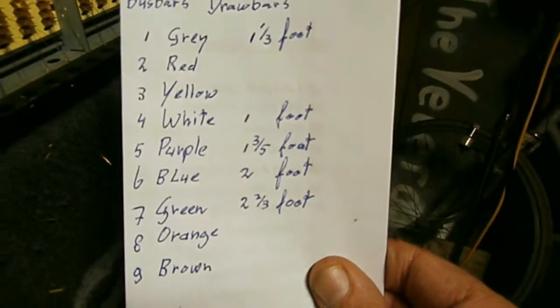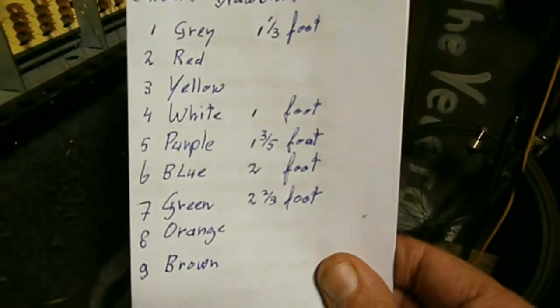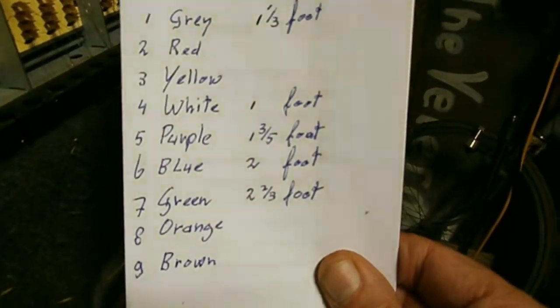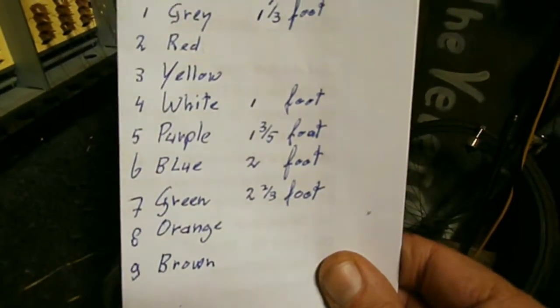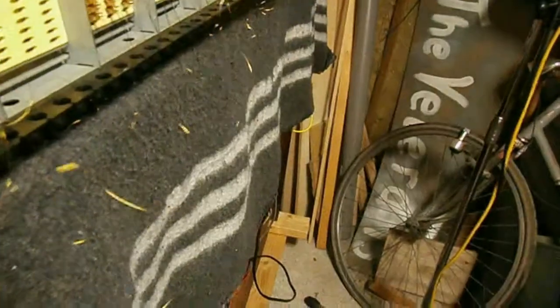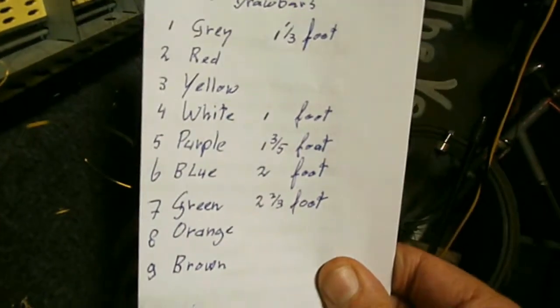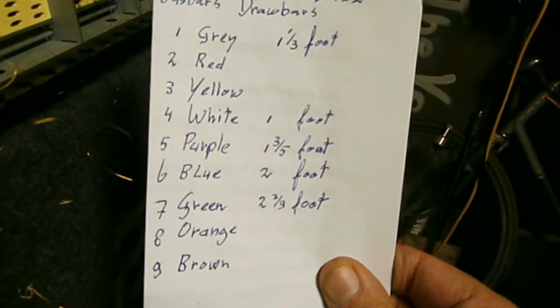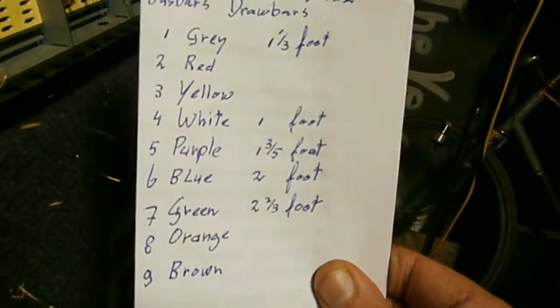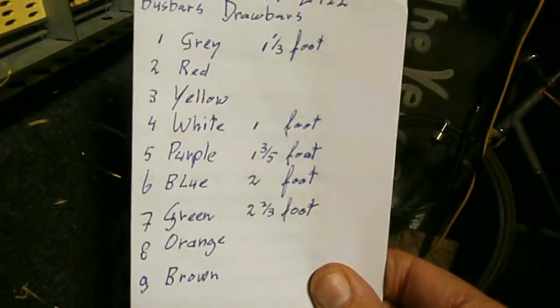So the lowest, the 16-foot, is below the brown wire. It's very important that you know what you're doing, because if you mess up, the organ sounds totally different.